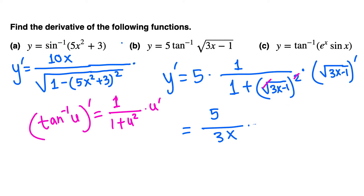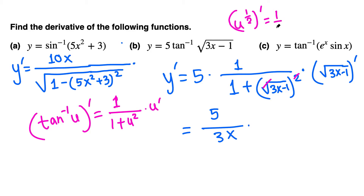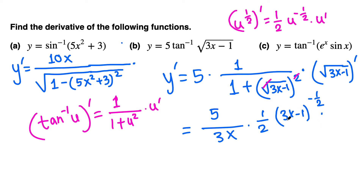The square root means 3x minus 1 raised to the 1/2. This is a function raised to 1/2, so we apply the chain rule again: the derivative of u raised to 1/2 is (1/2) u to the negative 1/2 times u prime. Applying that here: (1/2)(3x minus 1) raised to negative 1/2, times the derivative of the inside function.